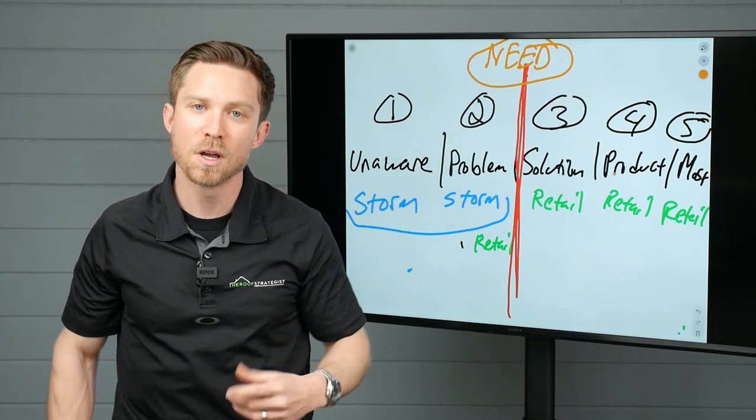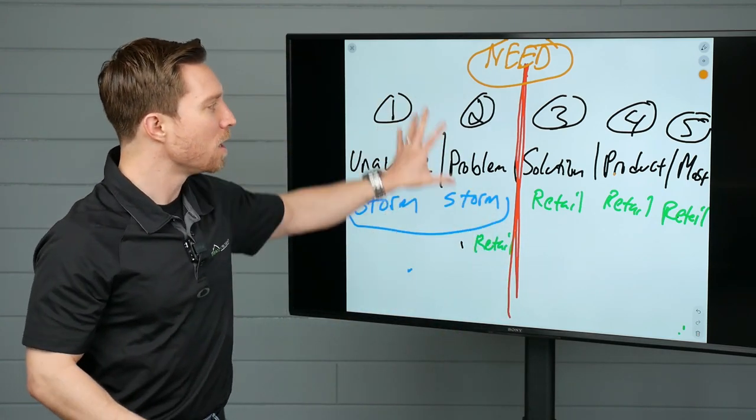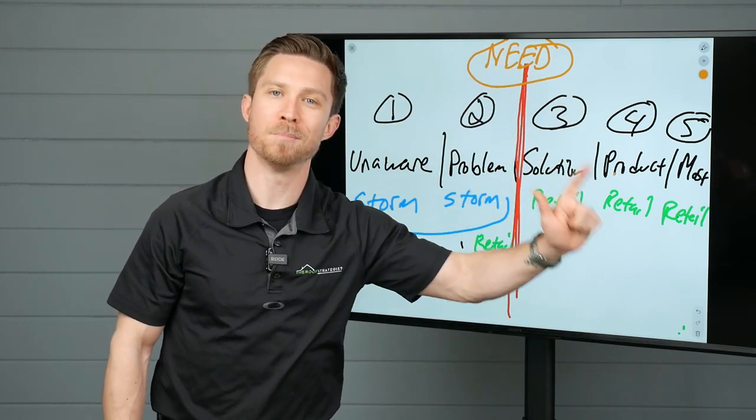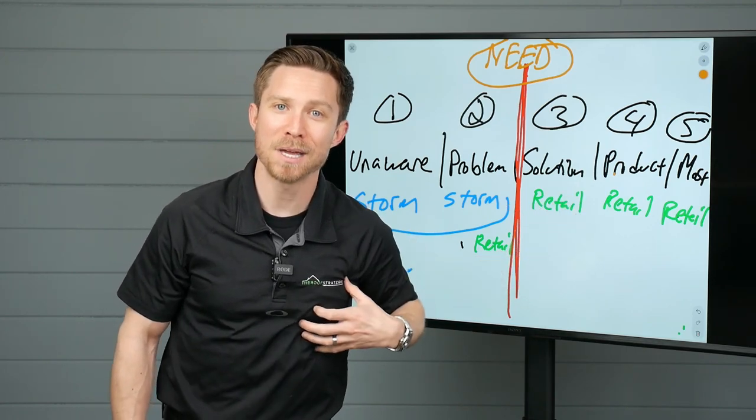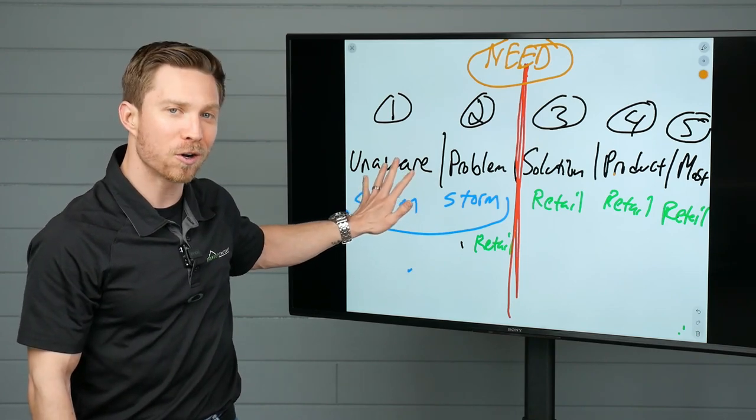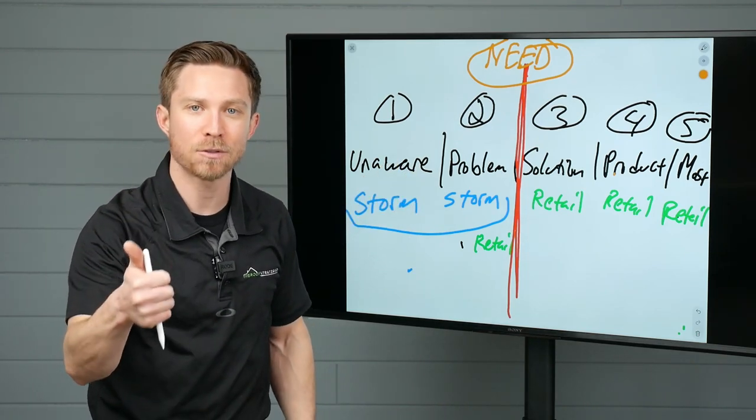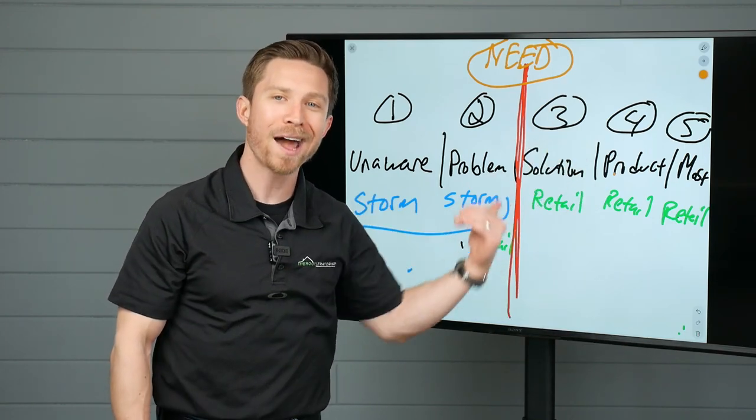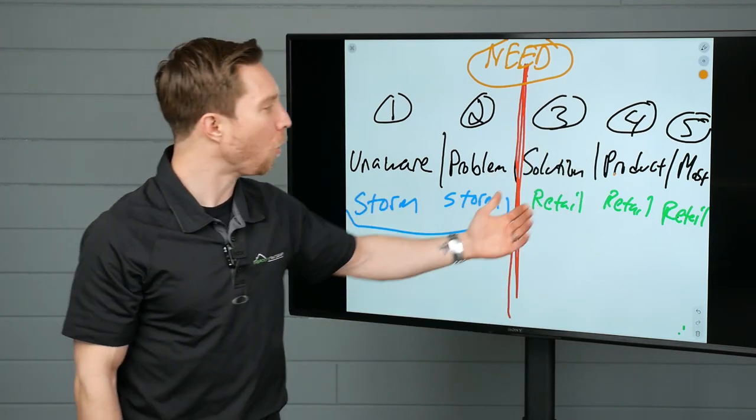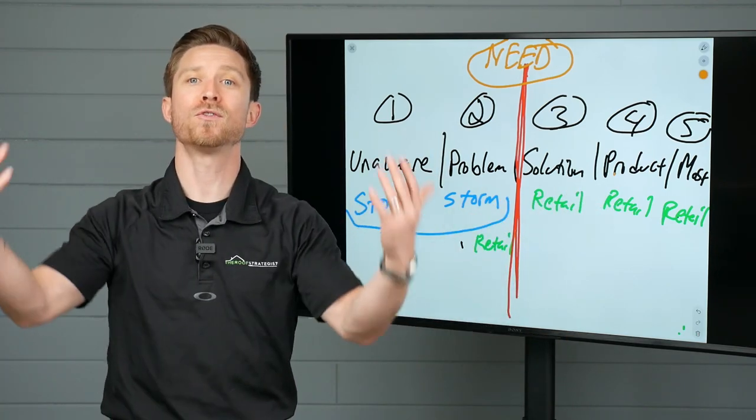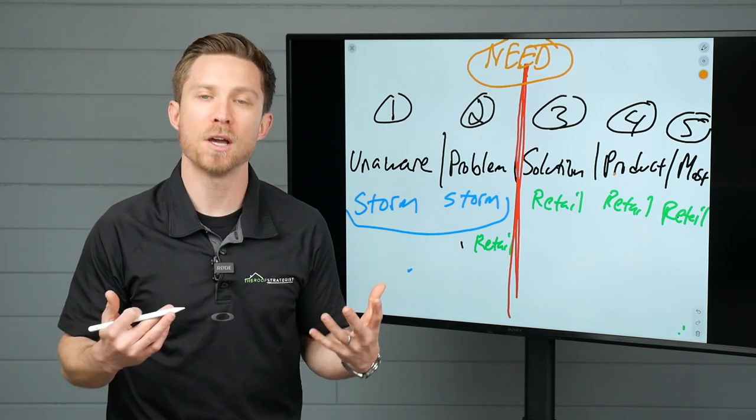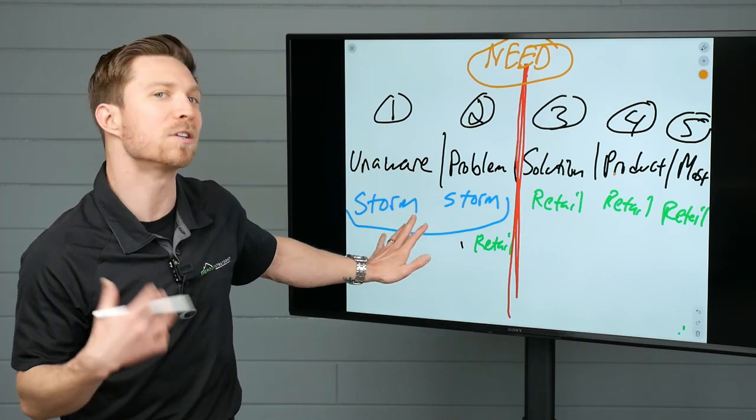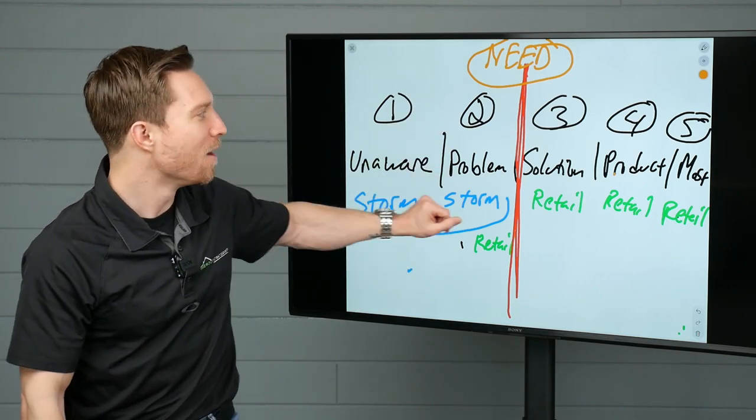And when you understand this, you spend more time on a storm damage self-generated lead creating the need, where on the retail side, you spend more time on the trust and the money issue. All right? In my opinion, that's why these storm damage deals are often harder because you show up completely unannounced and people don't even know they have a problem versus retail when 85% of that decision is made prior to the lead even entering your office and or they're relatively aware of the general concept that roofs need to get replaced in time.